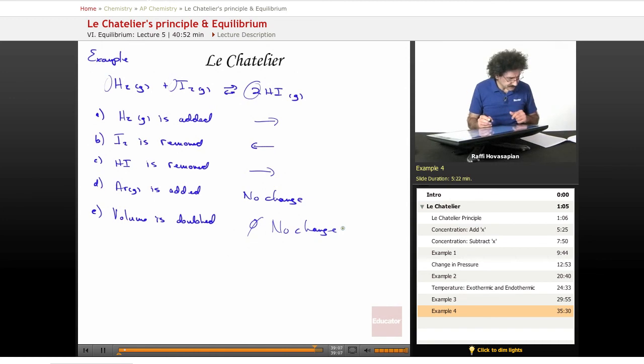Now let's do F, temperature is increased. Oh, I forgot to write the delta H here. The delta H of formation is 25.9 kilojoules. This is endothermic, because we need to know what the delta H is to decide what happens when we change temperature. If this is endothermic, that means heat is one of the reactants.